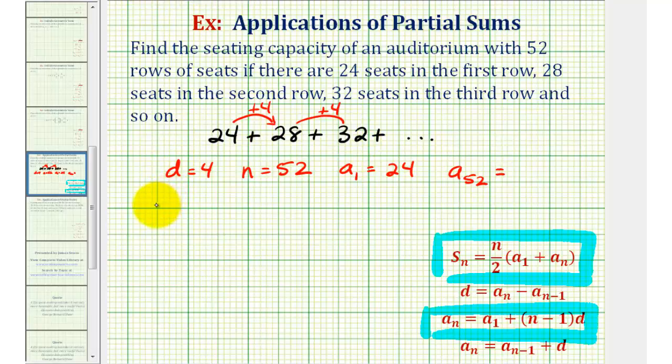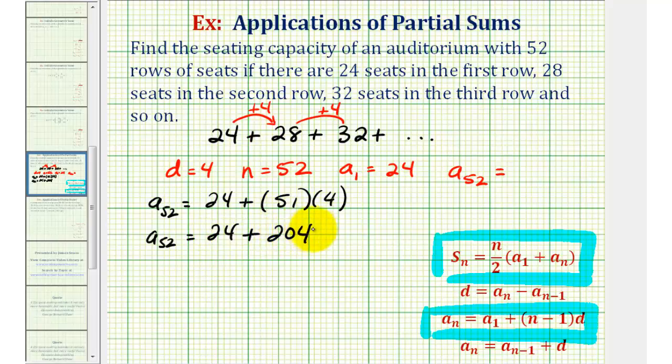So a₅₂ is going to be equal to a₁, which is 24, plus n minus one, where n is equal to 52, so we have 51 times our common difference d which we know is four. So a₅₂ is equal to 24 plus 204, so the 52nd term is 228.